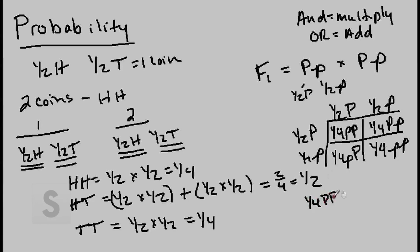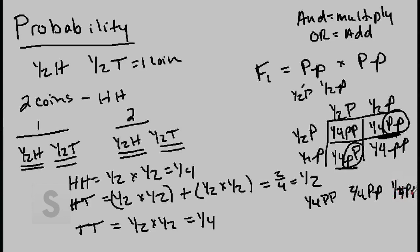So we have a one fourth chance of big P, big P. The probability of being heterozygous — remember this could be in any order — is one fourth for little P, big P plus one fourth for big P, little P. Since we use 'or,' we add them, giving two fourths for big P, little P in any combination. And then one fourth for little P, little P. This is a 1 to 2 to 1 ratio, or a 3 to 1 ratio, which correlates with what we covered in the last lecture — except this time we figured it out using the laws of probability.